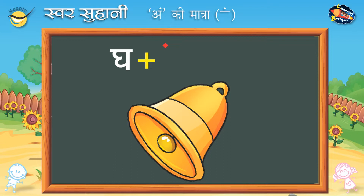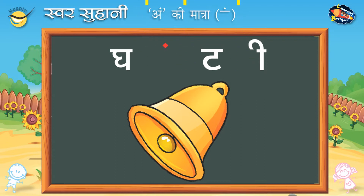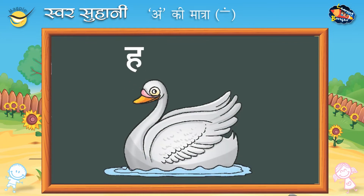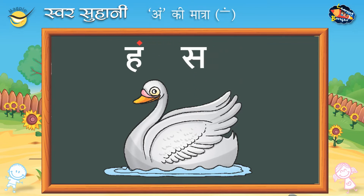अंग की मात्रा। ट — बड़ी एक। घंटी। ह — हंस।